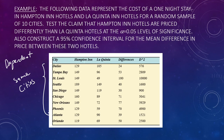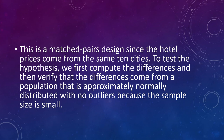This is a matched pair design since the hotel prices come from the same 10 cities. To test the hypothesis, we first compute the differences and then verify the differences come from a population that is approximately normally distributed with no outliers, because the sample size is small — less than 30 — so we have to check for normality and make sure there are no outliers.